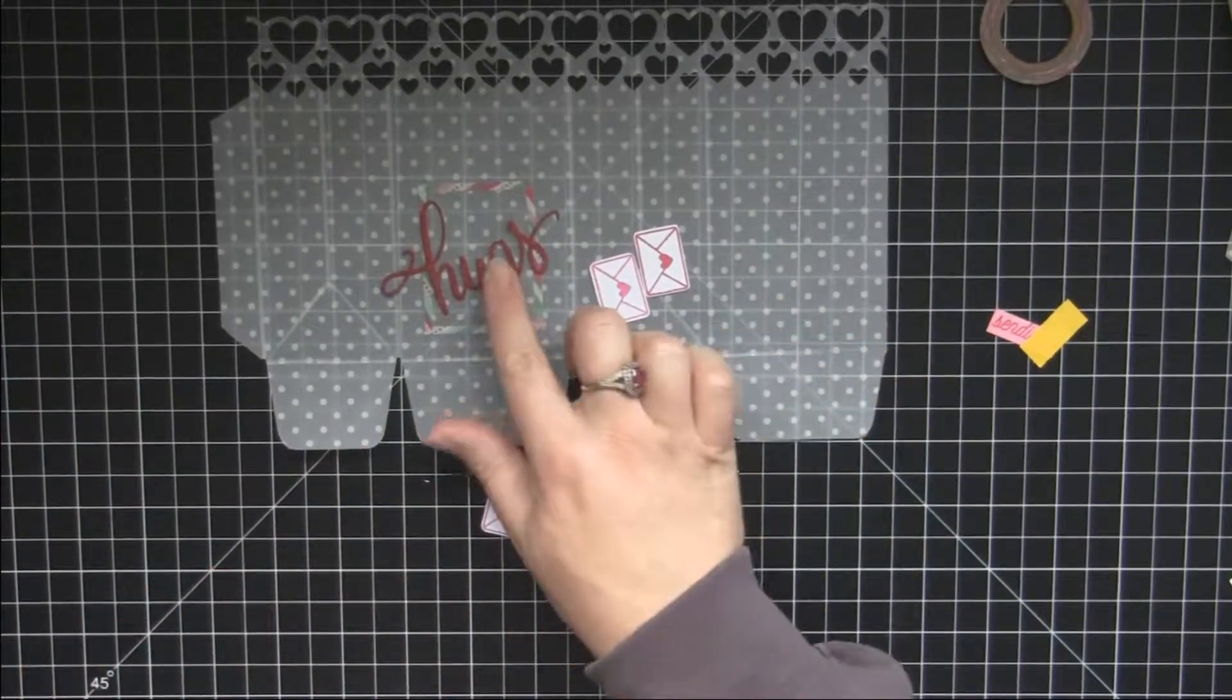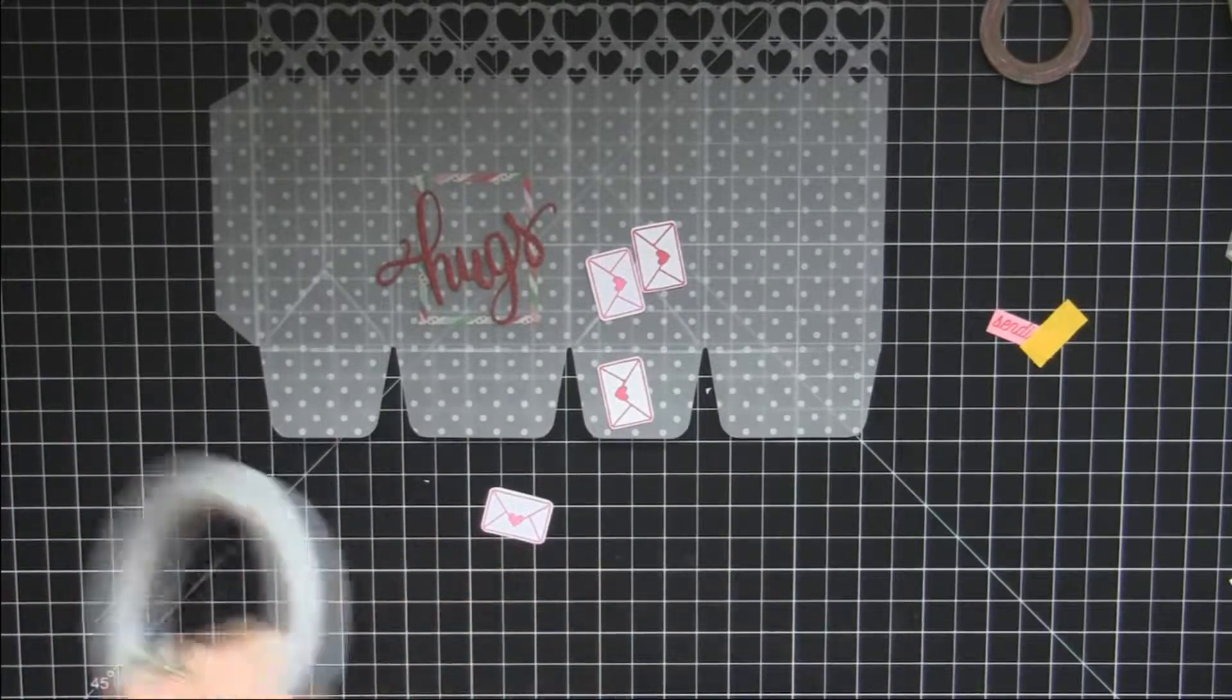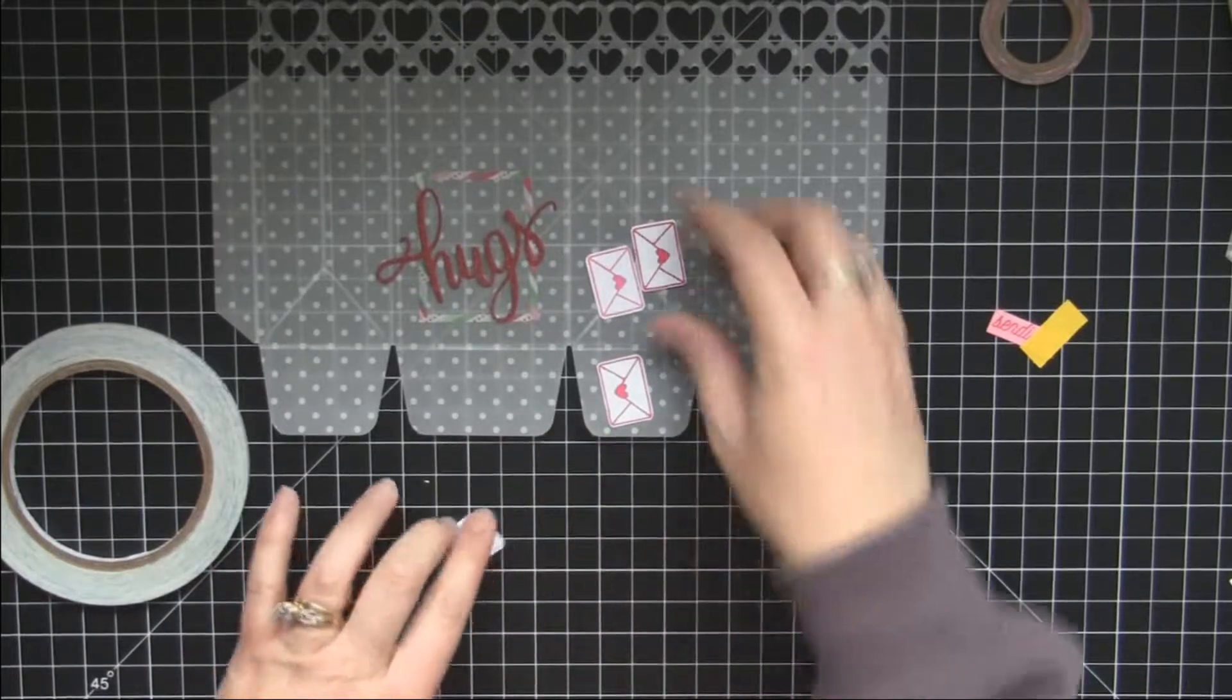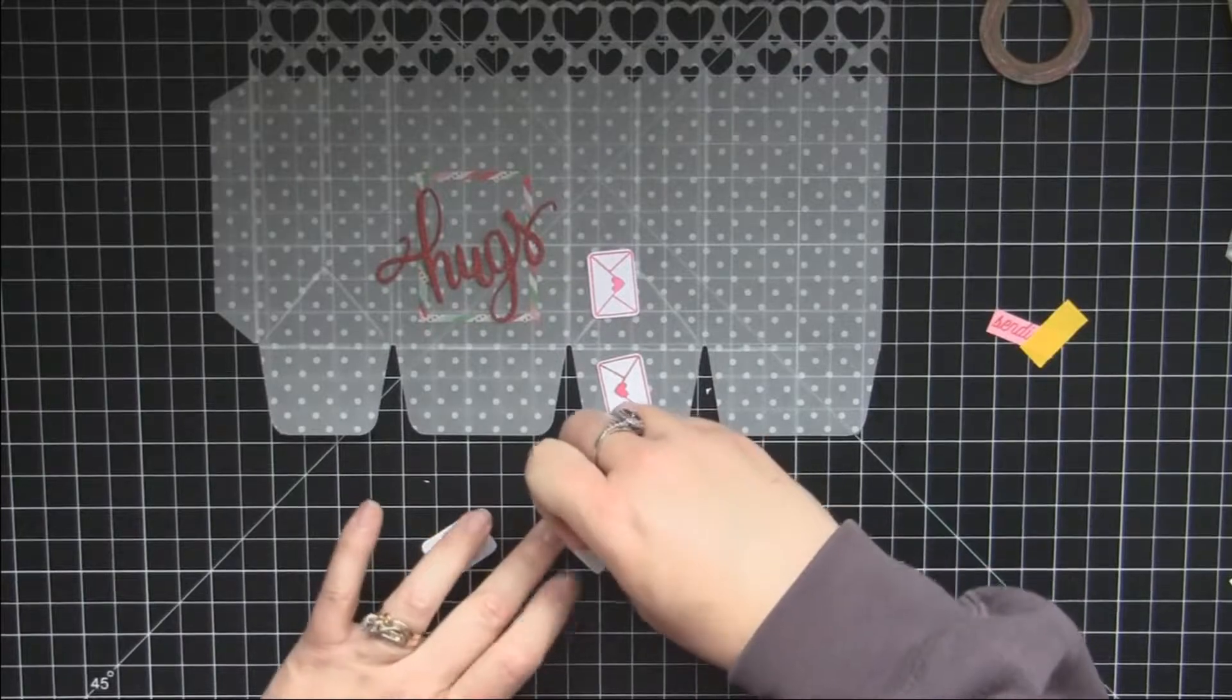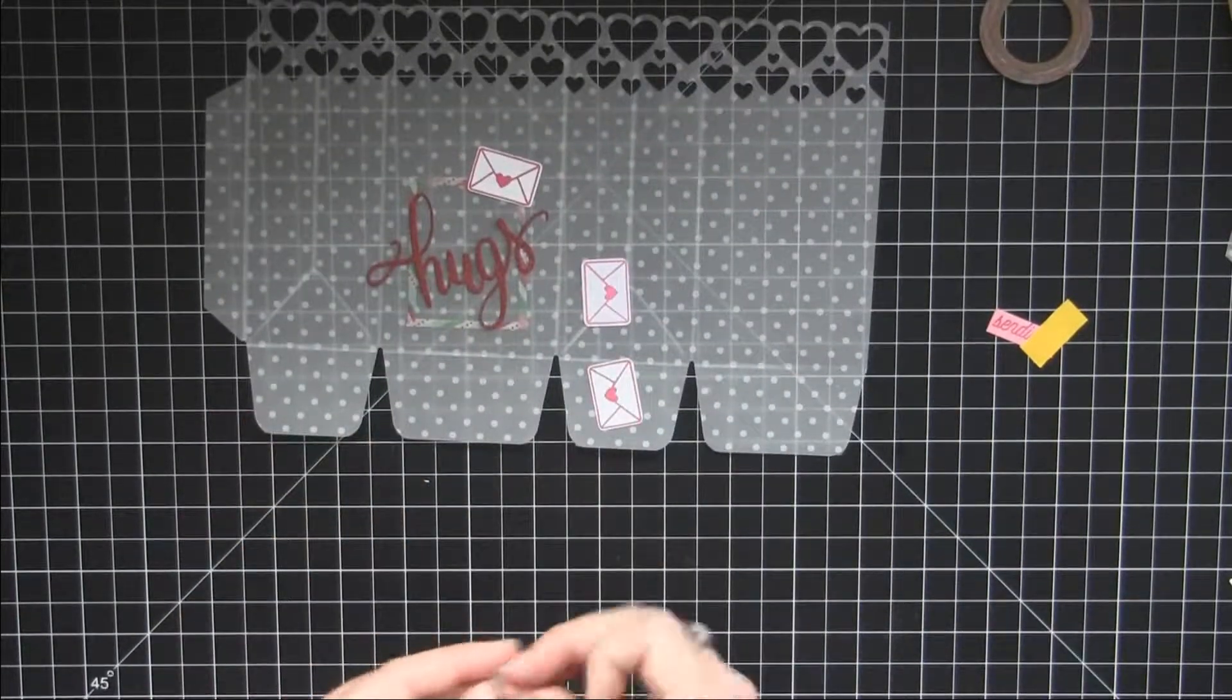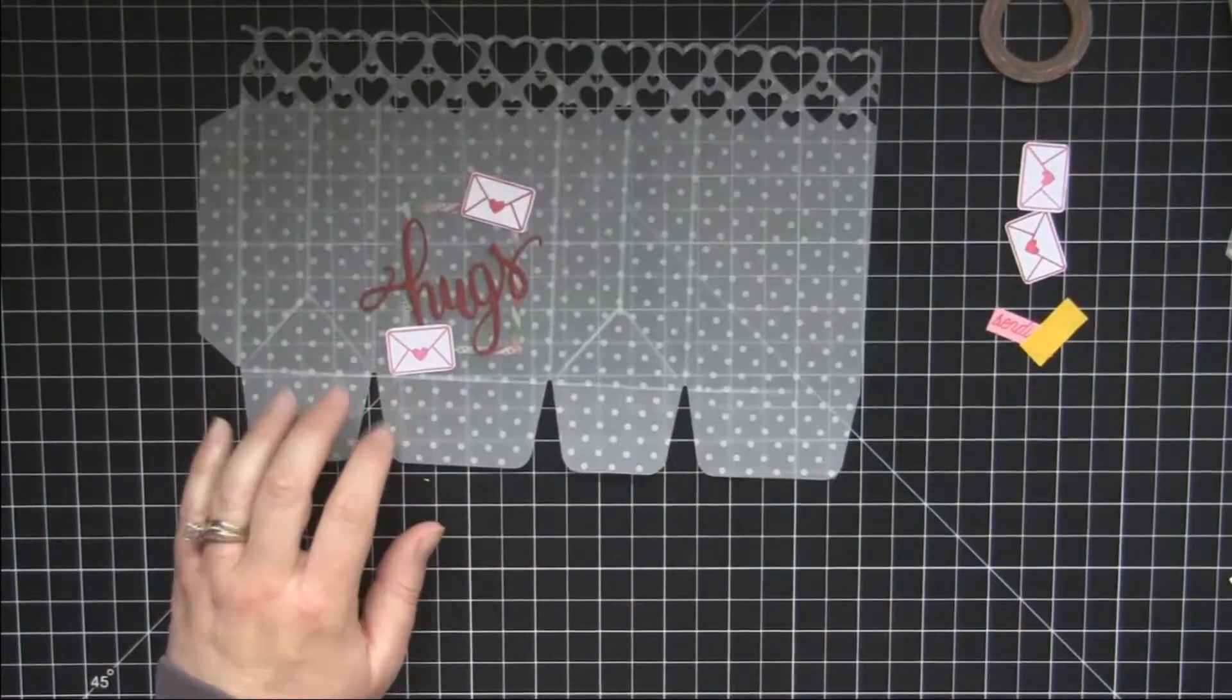Now that all those are cut out, I'm actually going to place two down. And I'm just going to use some score tape. I'm going to adhere a red and a pink one to the base of the bag. Okay, then I'll set those aside for right now.